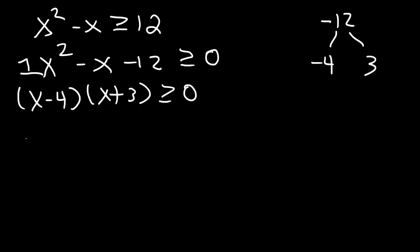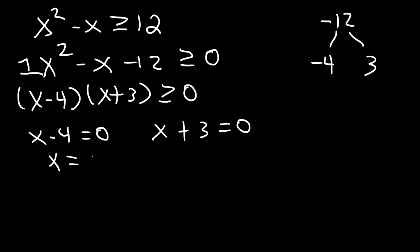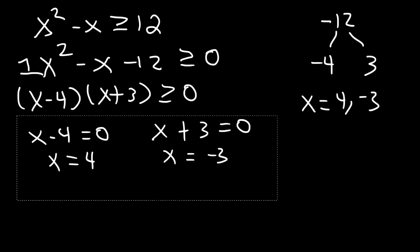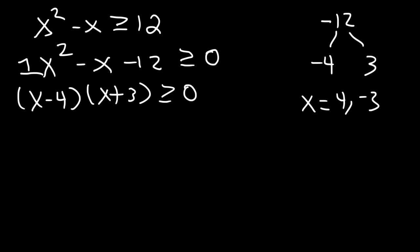If we set each factor equal to 0, there are two points of interest. If we add 4 to both sides, we get x equals 4. And if we subtract 3 from both sides, x equals negative 3. So x can be 4 and negative 3, and the reason they're included is because here it's greater than or equal to 0.